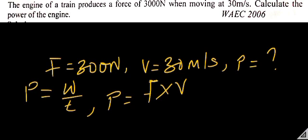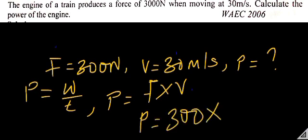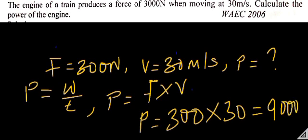We have force F equal to 3000 newtons and velocity equal to 30 meters per second. Using power equals force times velocity: power equals 3000 times 30, which equals 9000 watts. So the power of the engine is 9000 watts.